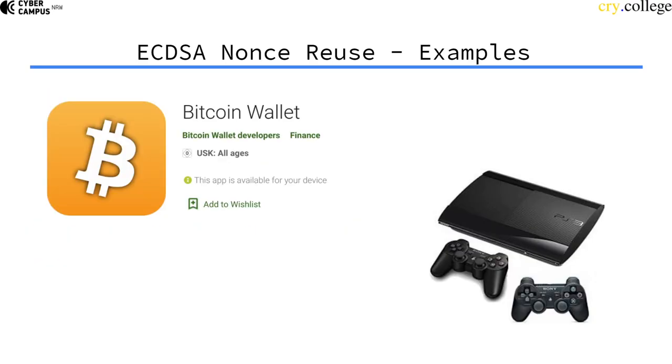Which makes this system quite fragile, because this has already happened in reality. This is, for example, how the code signing of the PlayStation 3 was broken by hackers in order to pirate and flash their own code onto the PlayStation. And also, the most popular Bitcoin wallet for Android had this exact same vulnerability. So, the Bitcoin private key was actually leaked via signatures.